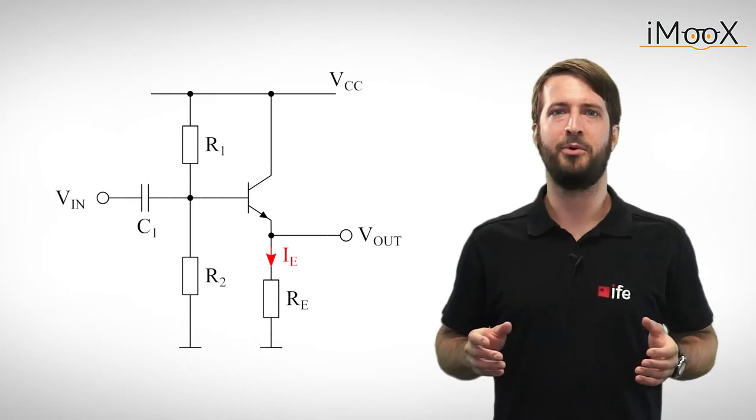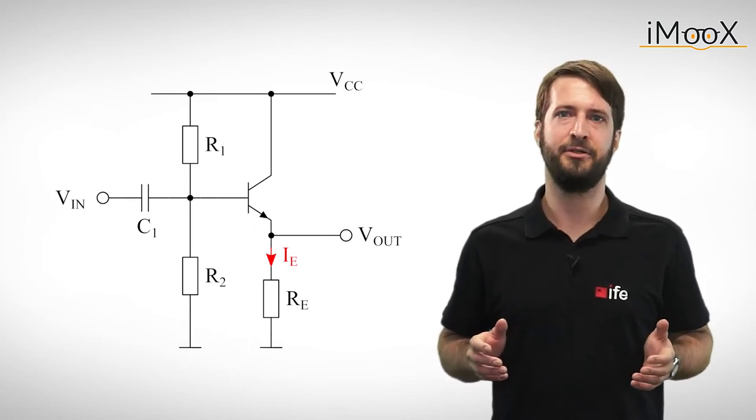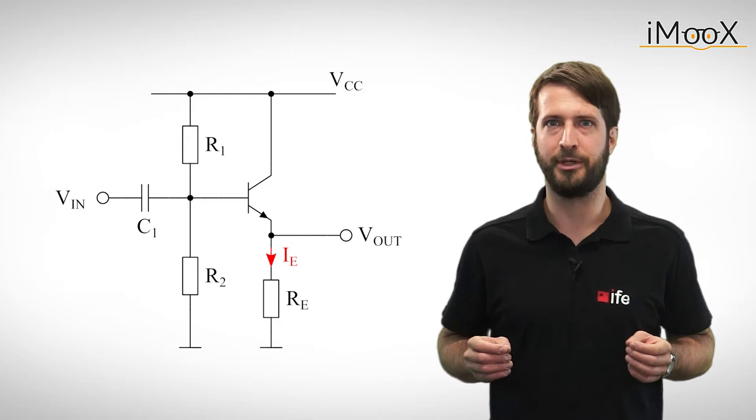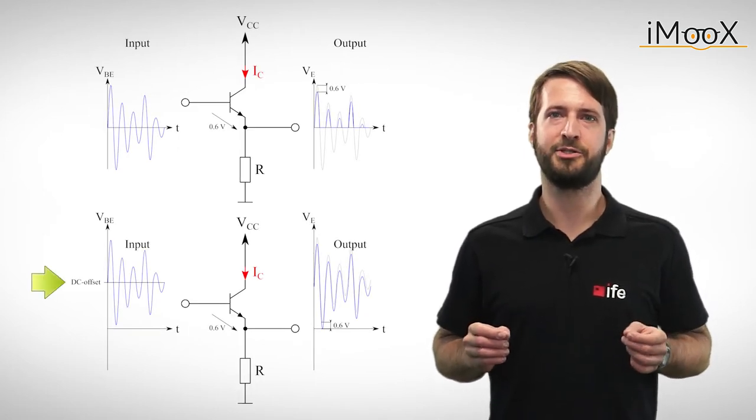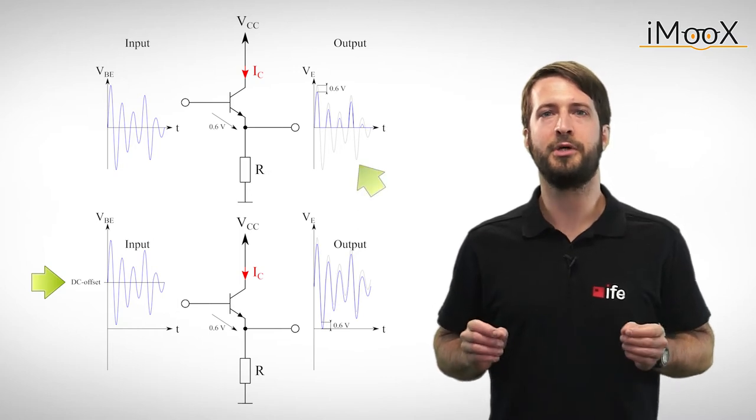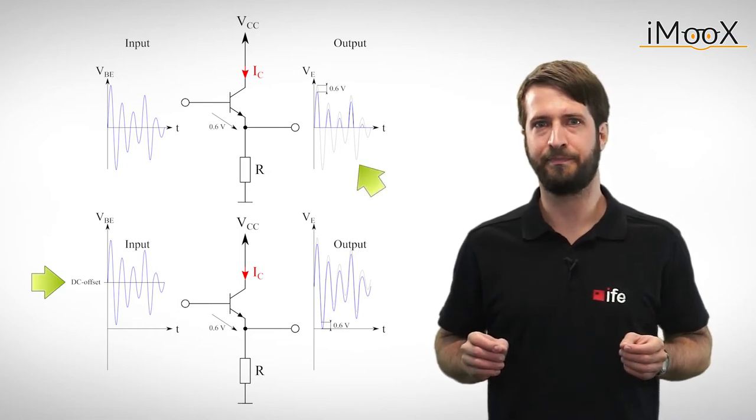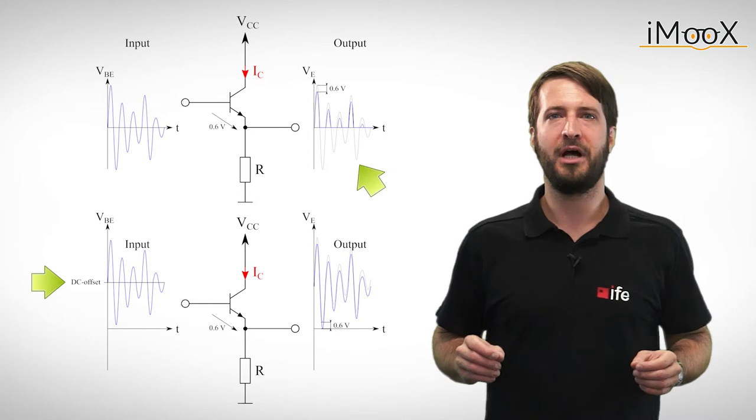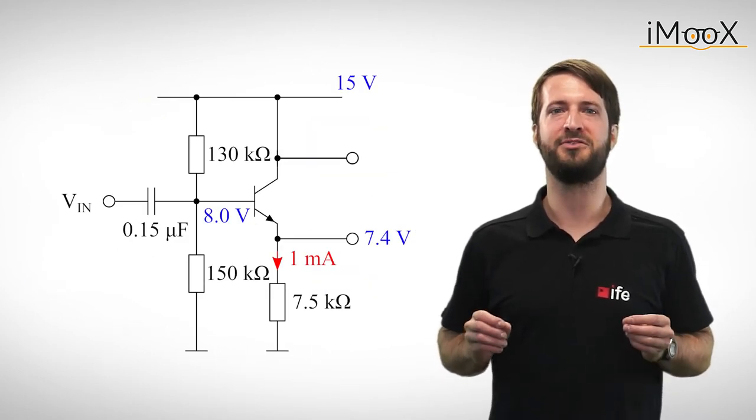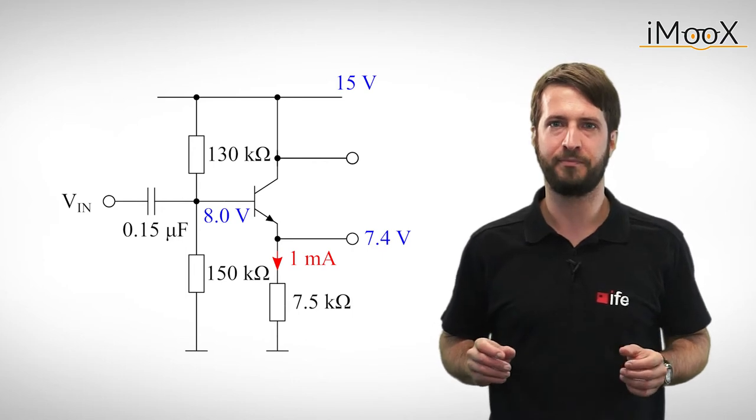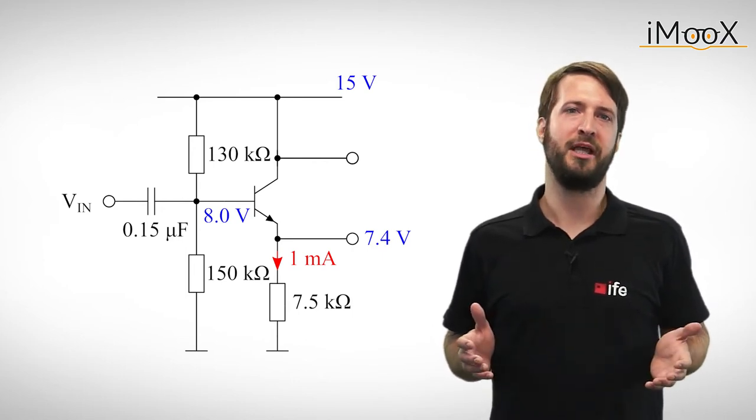So let's pick up where we left off in our last video by considering the emitter follower. We already know that we have to bias the voltage at the base in order to not run into trouble with clipping. We also know how to calculate the component values to be able to amplify a small alternating signal. But this circuit will only amplify currents.